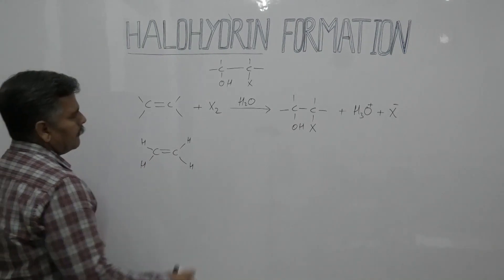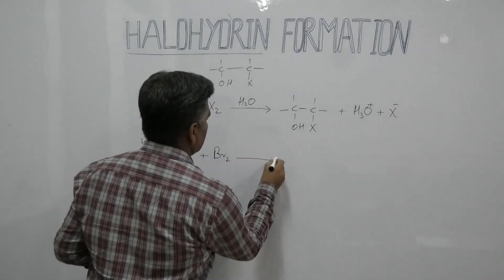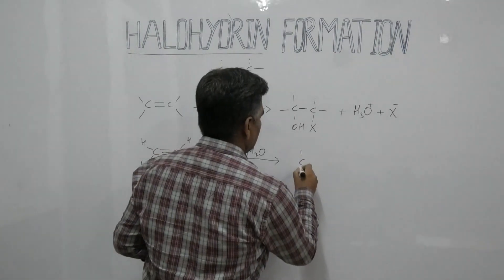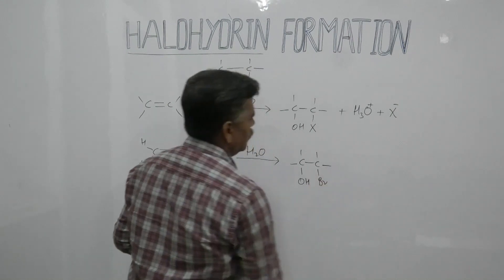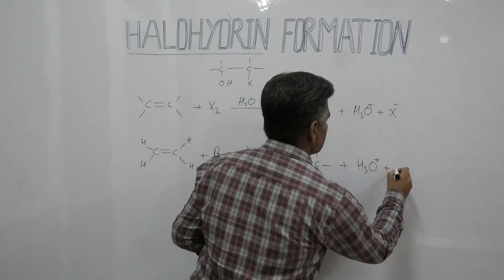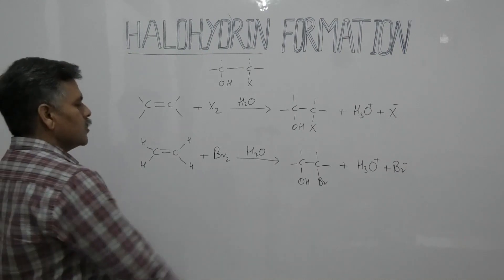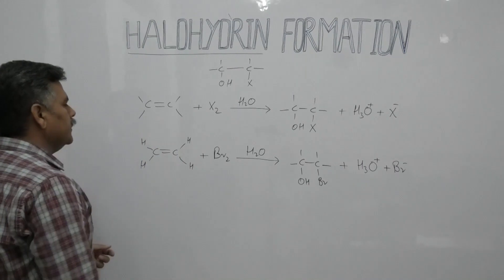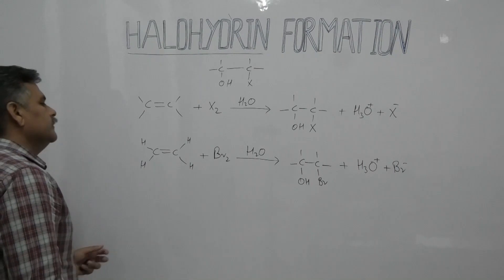For example, suppose we have an alkene and it reacts with bromine in the presence of water. Then we have bromohydrin as the product, along with H₃O⁺ and Br⁻. So this is bromohydrin. In the same way we can produce chlorohydrin. Both these molecules are known as halohydrins.